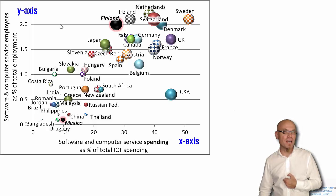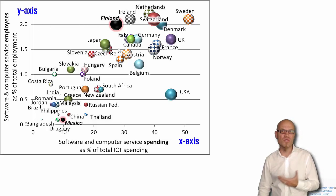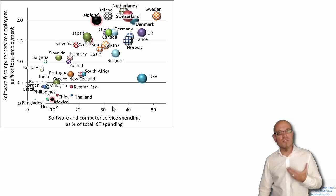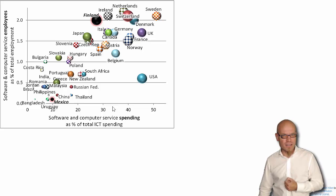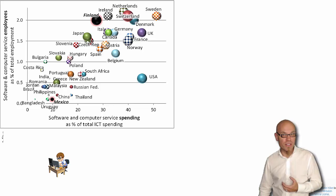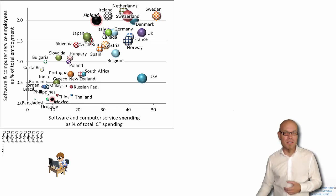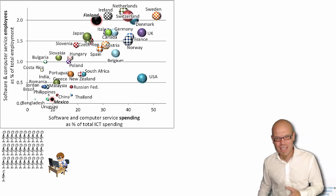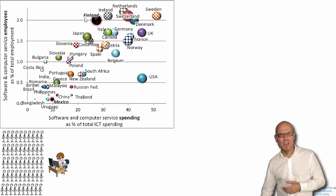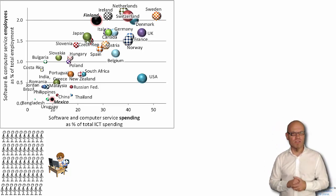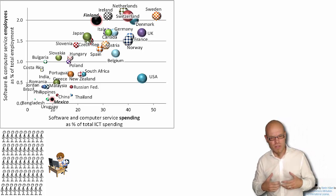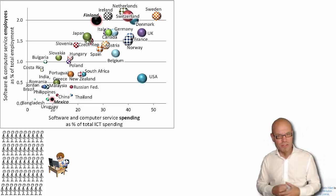And in Finland, 2%. Now, that doesn't seem like a big difference — 0.2% and 2% — but think of it this way: 2% is basically 1 in 50. That means there's one IT worker in Finland per 50 employees in the rest of the economy, so this IT worker has to attend to 50 others. That's a big task.